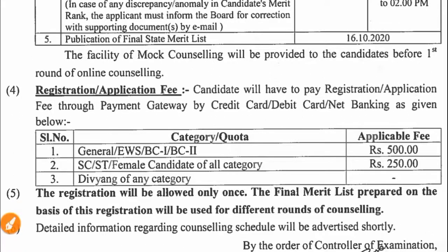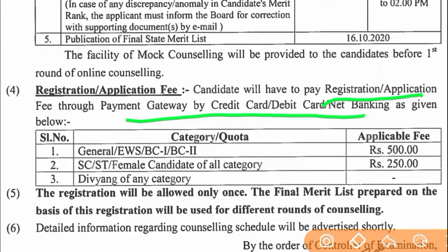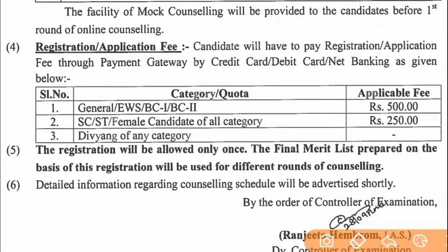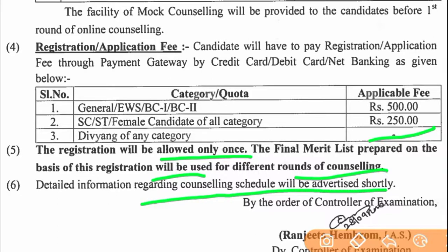Regarding registration and application fee: candidates must pay the fee through the payment gateway using credit/debit card or net banking. The fee is ₹500 for General, EWS, BC1, and BC2 candidates; ₹250 for SC/ST candidates and female candidates of all categories; and ₹0 (no fee) for Divyang (differently-abled) candidates of any category. Registration will be allowed only once, and the final merit list prepared on the basis of registration will be used for different rounds of counselling. Detailed information regarding the counselling schedule will be advertised shortly. Since registration happens only once, candidates should fill all their details carefully and correctly to avoid any issues in subsequent rounds of counselling.